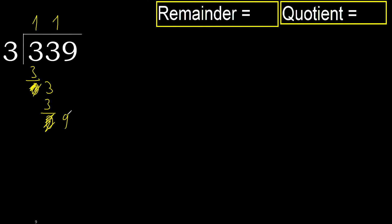9. 3 multiplied by 3 is 9. Subtract — remainder 0. Next.